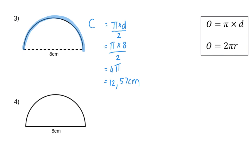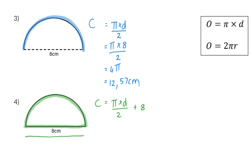In the fourth example we have a similar shape to example 3, but instead of only going around half of the original circle circumference, we also travel along the diameter back to the point we started. So we take our original formula of pi times diameter divided by 2, and now we still need to add that diameter of 8 centimeters to get back to the starting point. This means we have 12.57 plus another 8, totaling 20.57 centimeters.